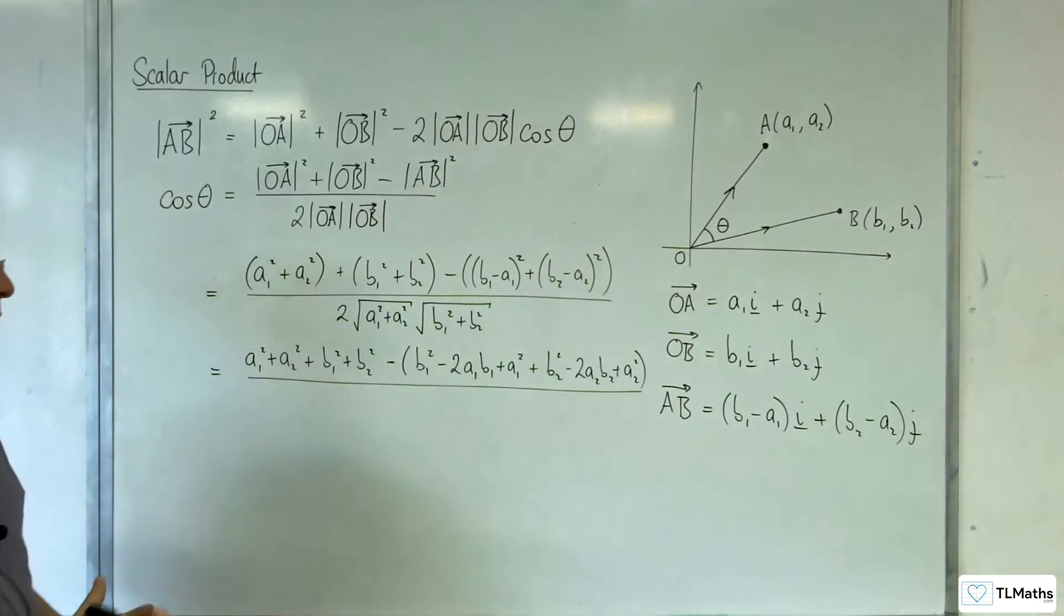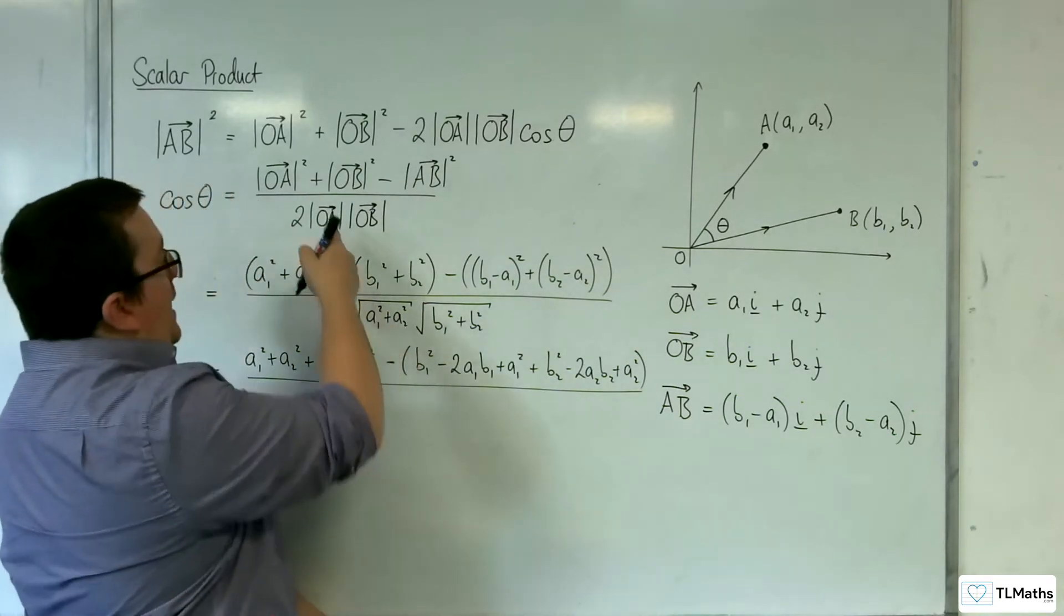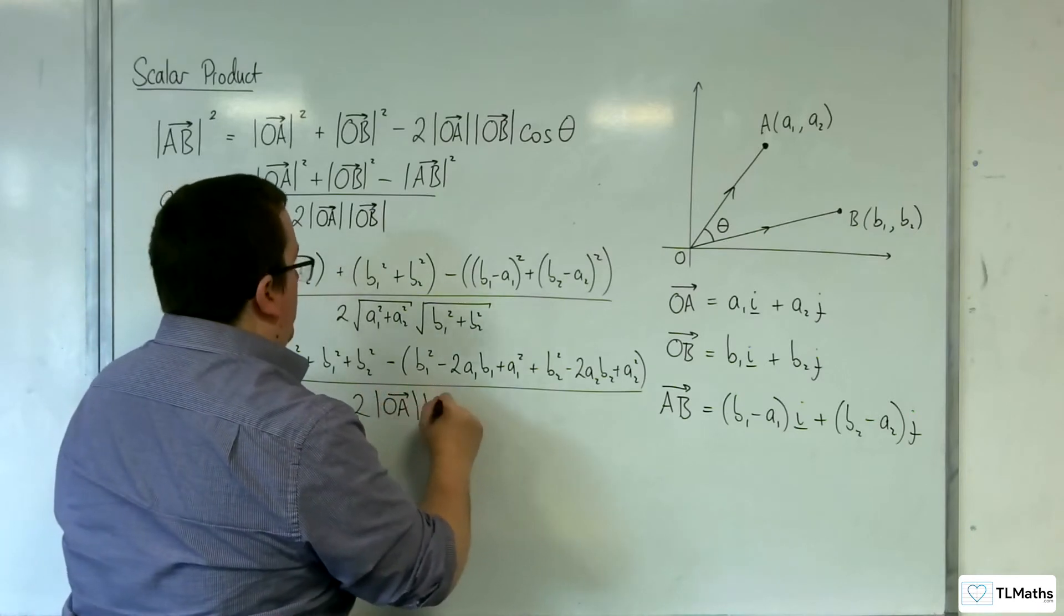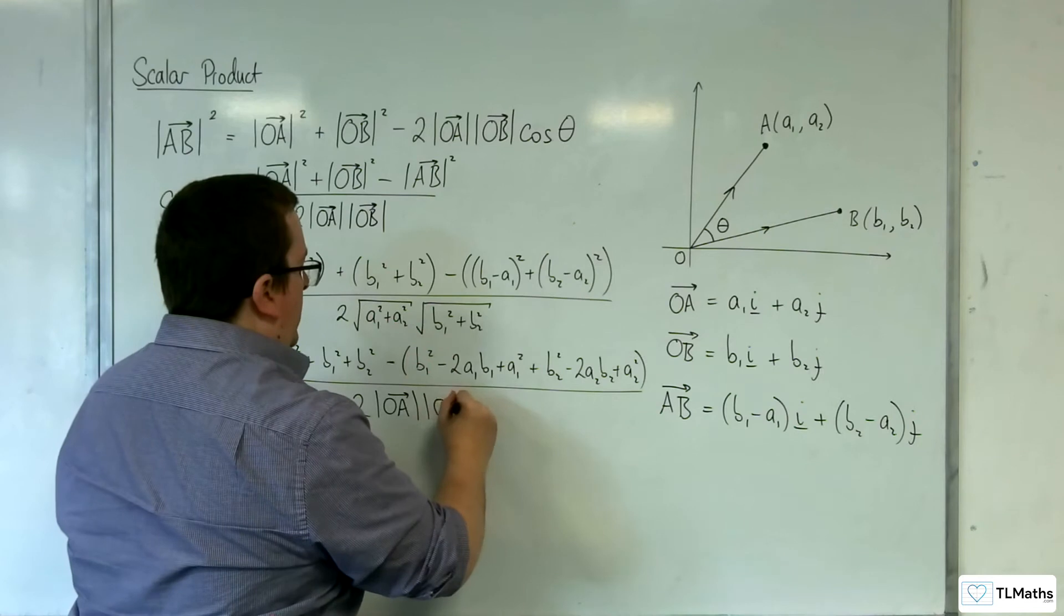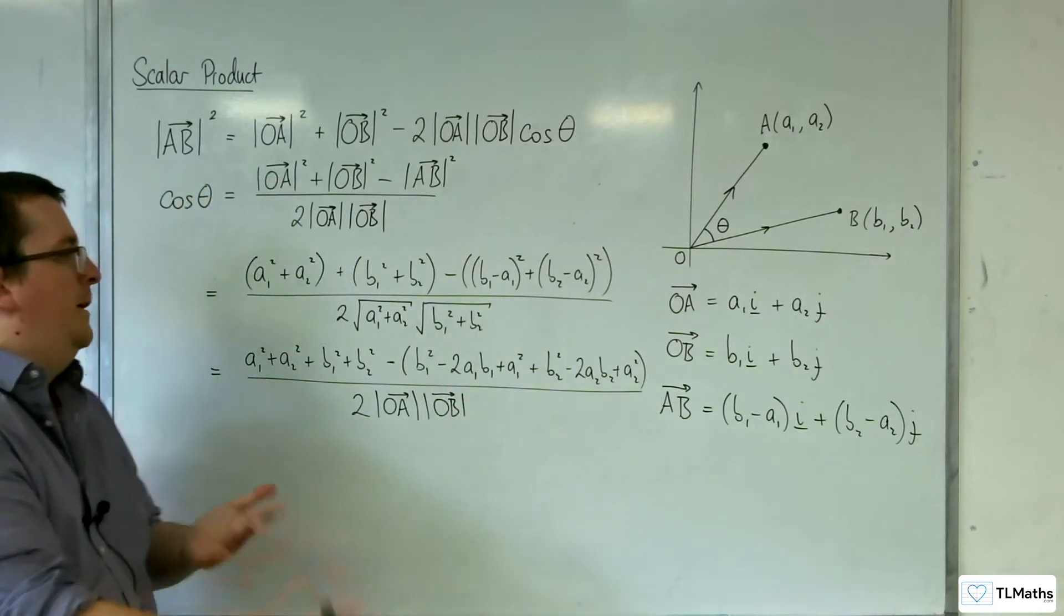Now in the denominator, what I'm going to do is I'm just going to keep it now. I'm going to go back to this notation. I'm just going to leave it like that because there's nothing I'm going to do with the denominator at the moment. I'm just going to leave it as those two lengths.